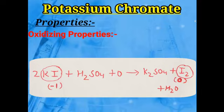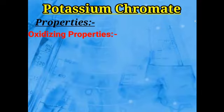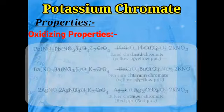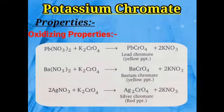This oxidation happens in the presence of oxygen from potassium chromate. The next property: potassium chromate reacts with lead nitrate, barium nitrate, and silver nitrate. With lead nitrate it forms yellow precipitates of lead chromate. With barium nitrate it forms yellow precipitates of barium chromate. With silver nitrate it forms red precipitates of silver chromate. Therefore, potassium chromate can be used to detect the presence of lead, barium, and silver ions.